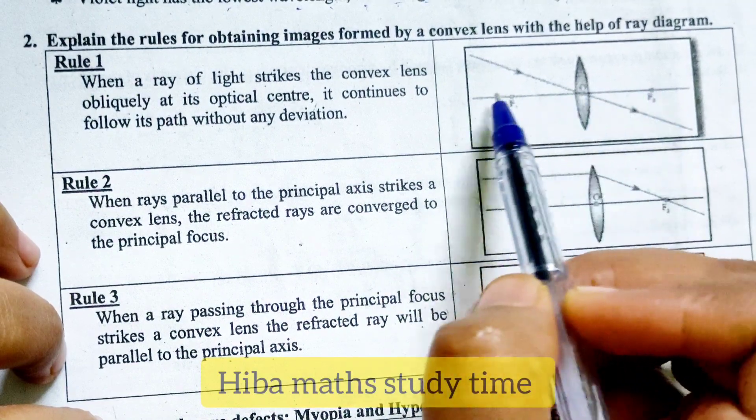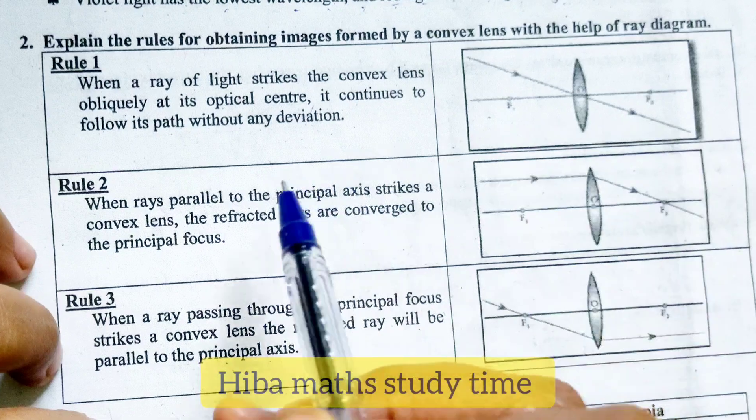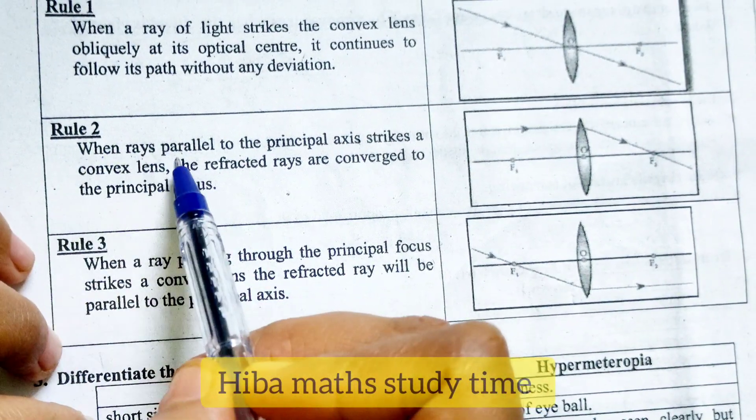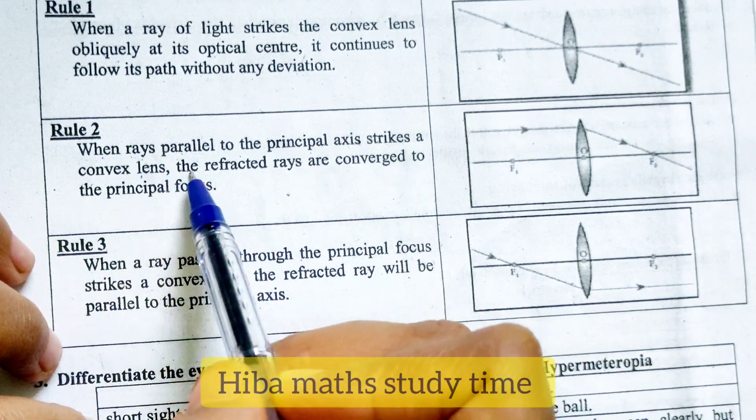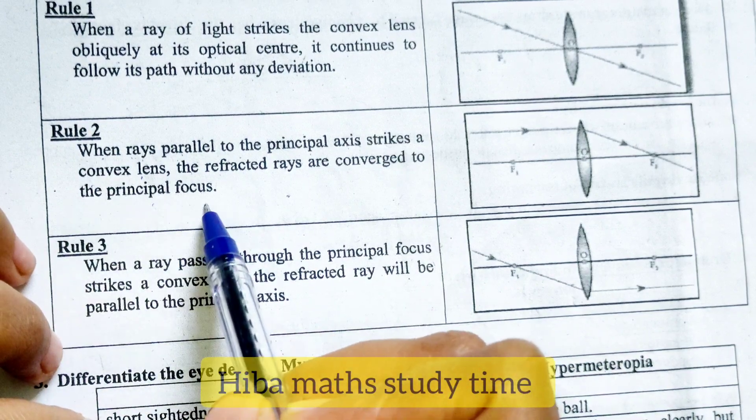If we have a principal axis, we have to draw the diagram. Rule 2, when rays parallel to the principal axis strikes a convex lens, the refracted rays are converged to the principal focus.